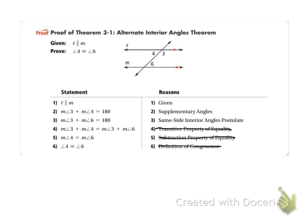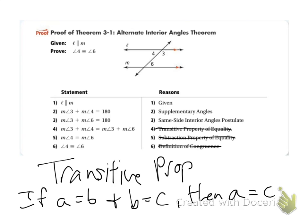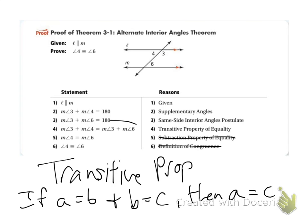We're going to use something called the Transitive Property — stick this in your notes. It says if A equals B and B equals C, then A equals C. I can use the transitive property here because if angle 3 plus angle 4 equals 180 and angle 3 plus angle 6 equals 180, then they must both be equal, so we set them equal using the transitive property. Then, if I subtract the measure of angle 3 from both sides, I get that the measure of angle 4 equals the measure of angle 6 — that's the subtraction property of equality. Then I'm allowed to say angle 4 is congruent to angle 6 by the definition of congruence.